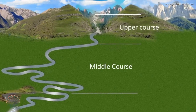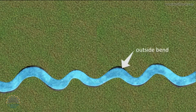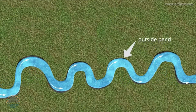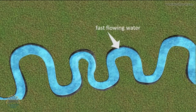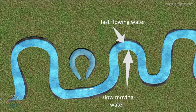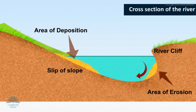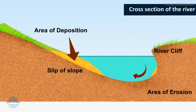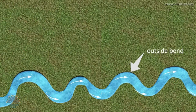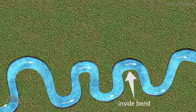Oxbow lakes are an evolution of meanders that undergo extensive deposition and erosion. Strong erosion takes place on the outside bend of a meander while deposition takes place on the inner bend. As a result, the neck of a meander narrows. During extremely high discharge, for example a flood, it is more efficient for a river to flow across the neck of a meander rather than around it. When discharge returns to normal levels, the river continues to follow this new course. The meander is left connected to the channel as a cutoff, and deposition eventually separates the cutoff from the main channel, leaving behind an oxbow lake. Meanders are bends in a river that form as a river's sinuosity increases, when moving water erodes the outer banks and widens its valley, while the inner part deposits silt.